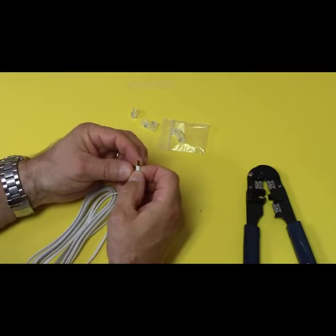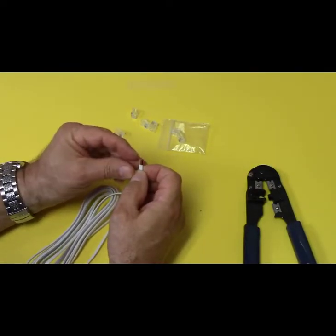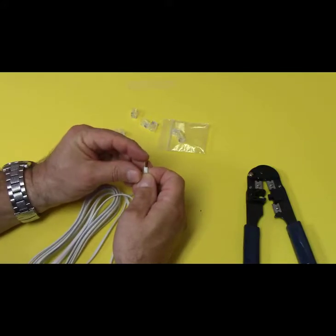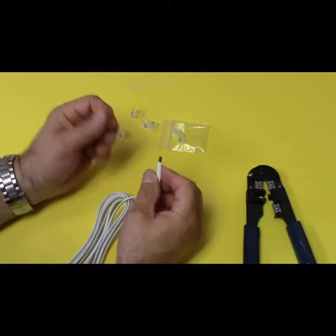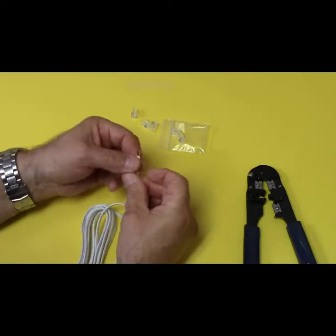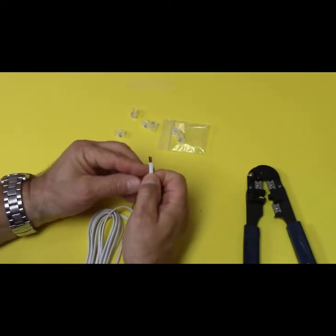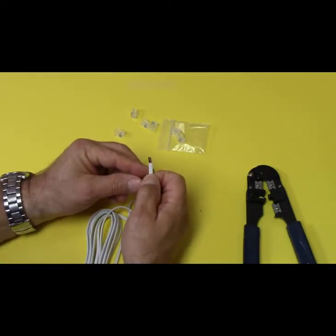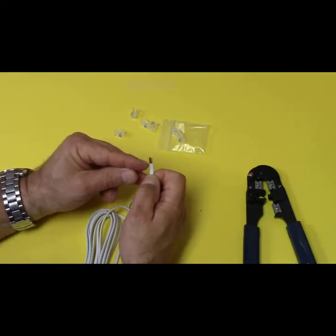So we don't want to move these around too much. But if you look, you have yellow, green, red, and black. So when we put this into the connector, we want the black on the left. So when we're looking at it and ready to put it into that little RJ11, it should be black, red, green, yellow.